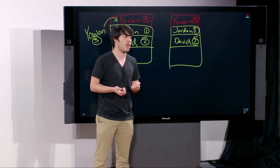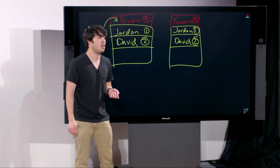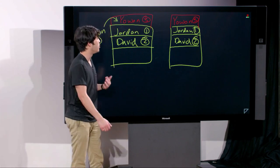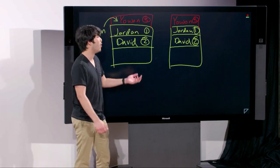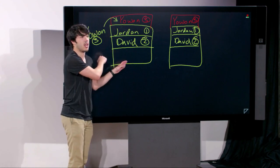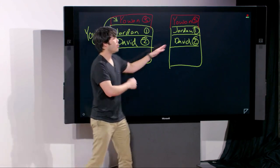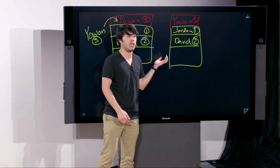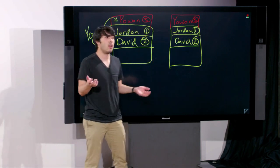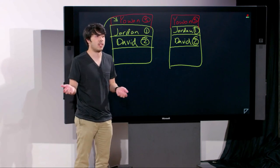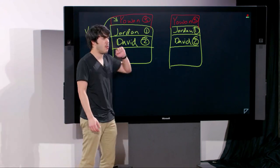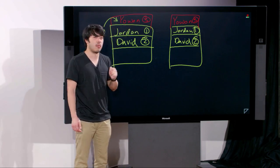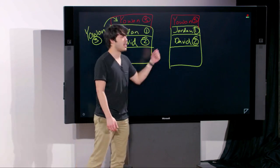Keys must be unique — if two items share the same key, React throws a warning about duplicate keys and won't know which is which. By assigning unique keys to each member of a list, React can perform this optimization and avoid unnecessary re-renders when list order changes.